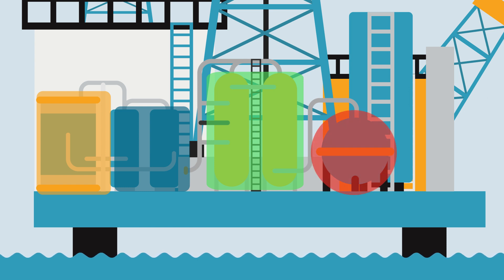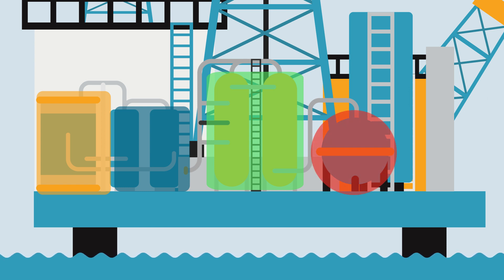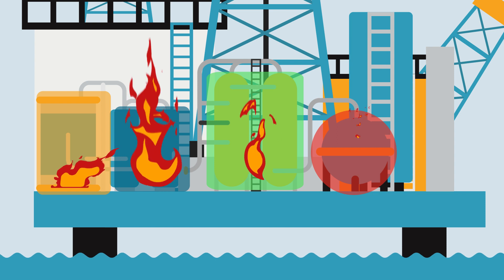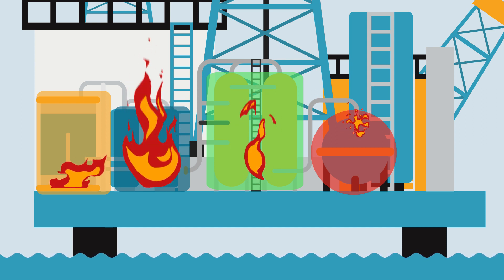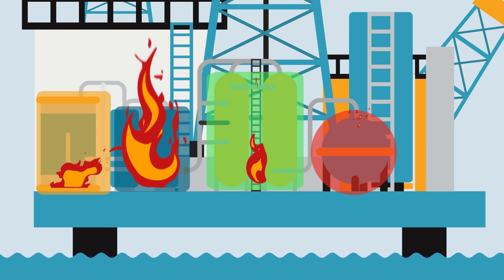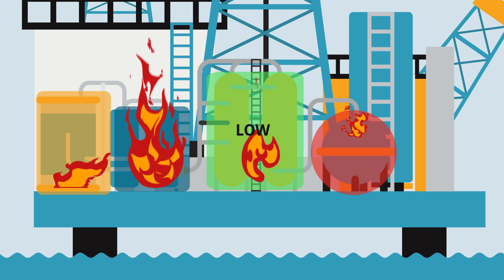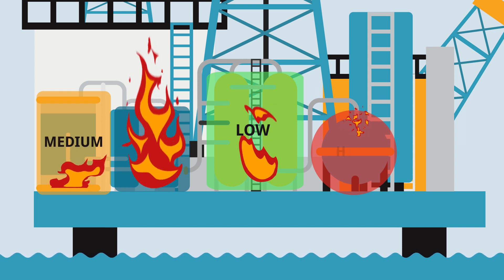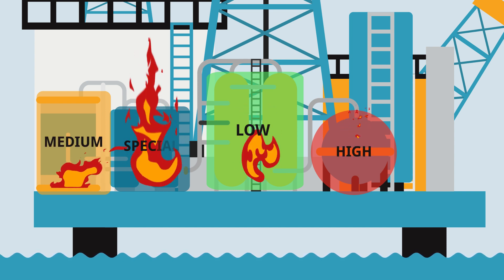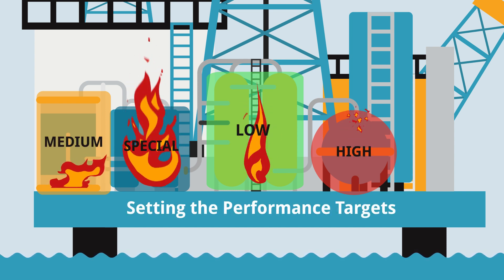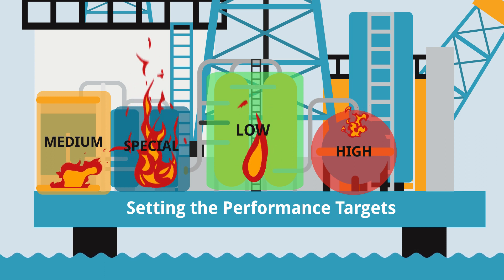Step 2: Depending on the expected fire type, size, and escalation potential, risk grades are applied to the process equipment. This stage is referred to as setting the performance targets.